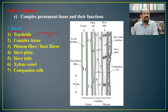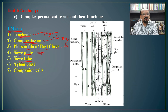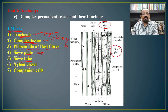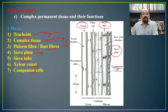For 1 mark questions on phloem and xylem: tracheids are part of xylem; complex tissues mean both phloem and xylem; phloem fibers are also known as bast fibers; sieve plate is the perforated cross wall between sieve tubes; sieve tube structure; xylem vessel is cylindrical; companion cell is associated with the sieve tube. Xylem fibers, phloem parenchyma, and xylem parenchyma can also be asked for 1 mark.